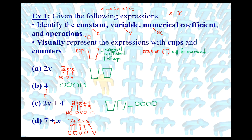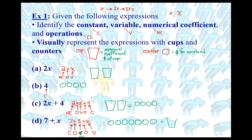For part d, 7 plus x: 7 is the constant, so draw seven counters, then a plus symbol. The numerical coefficient is 1, so you have one cup.